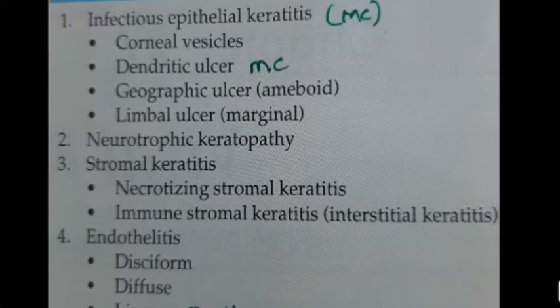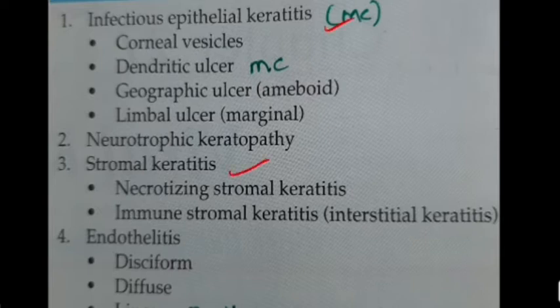The ocular manifestations of HSV affect the lids, leading to blepharitis; it affects the conjunctiva and the iris as well. Coming to the corneal lesions, we have infectious epithelial keratitis, stromal keratitis, and endothelitis. I had also included neurotrophic keratopathy as well as metaherpetic keratopathy as separate entities.